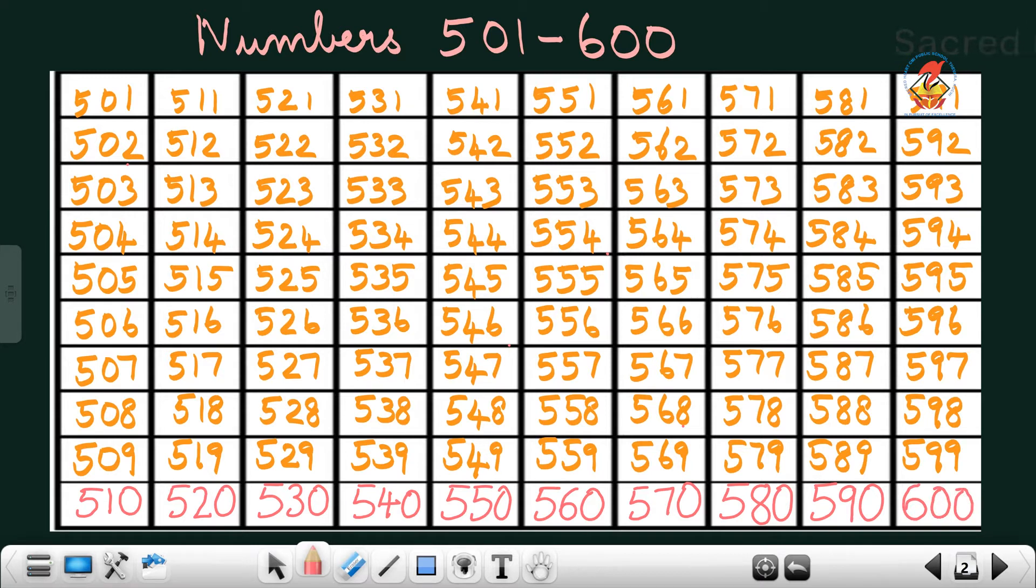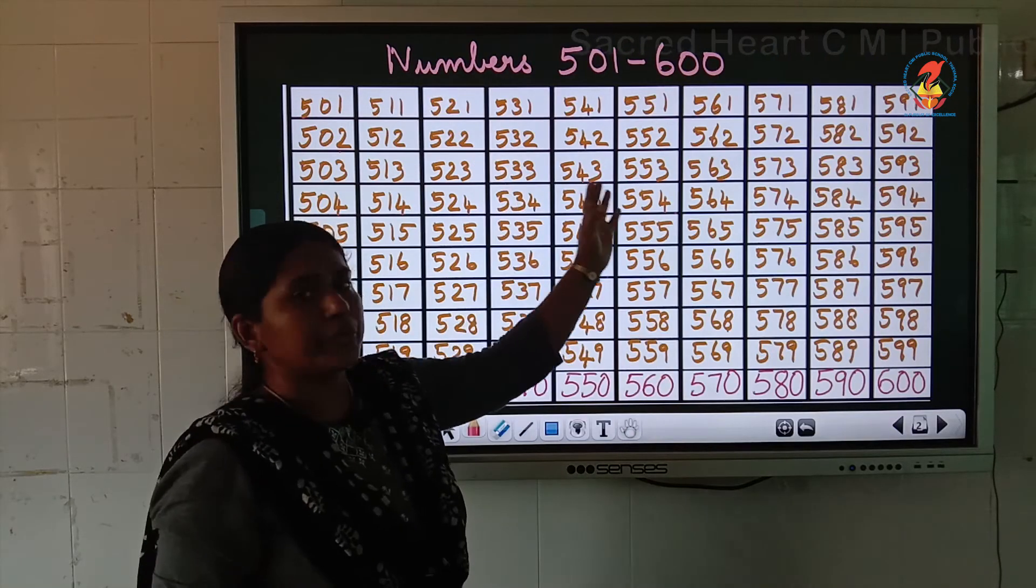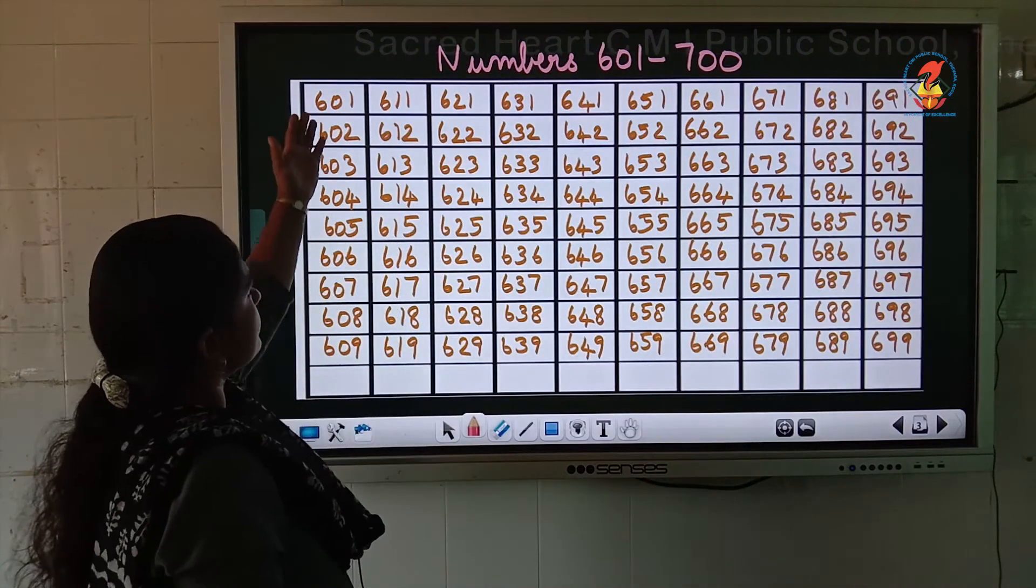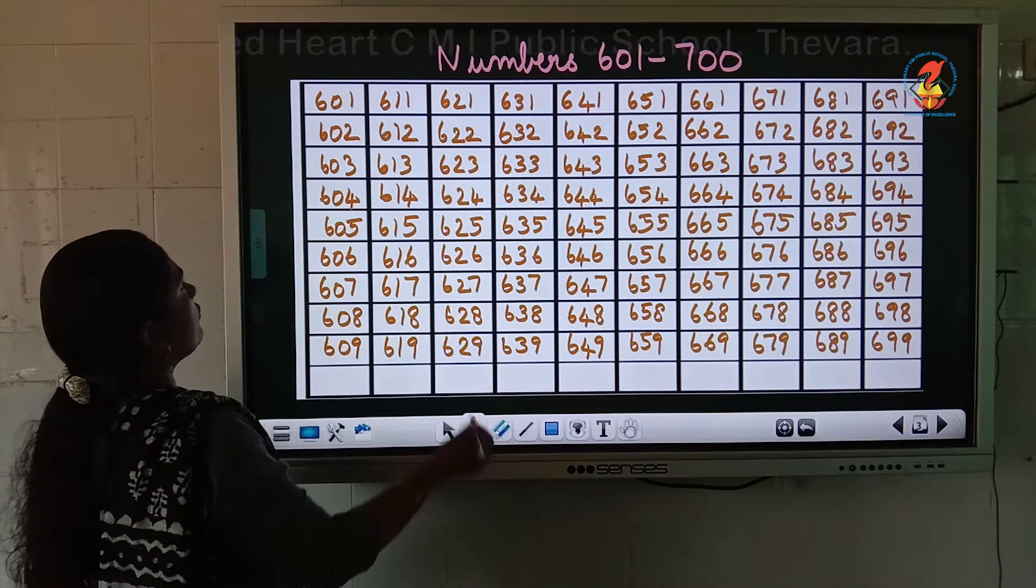Okay children, all of you understand? So, we studied the numbers from 501 to 600.